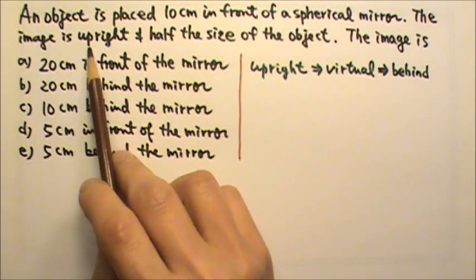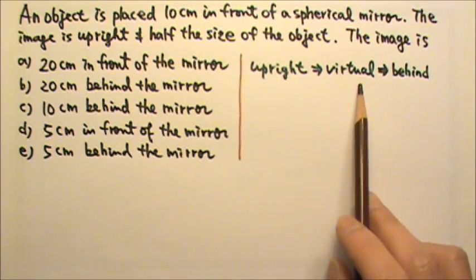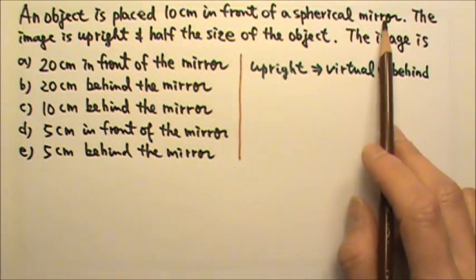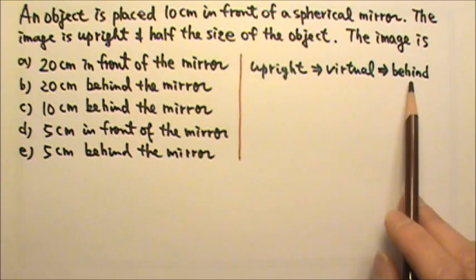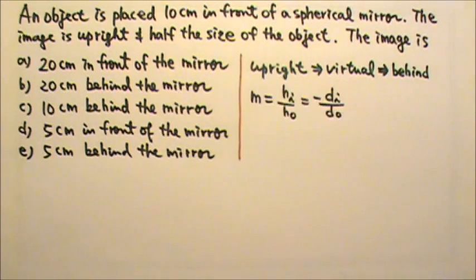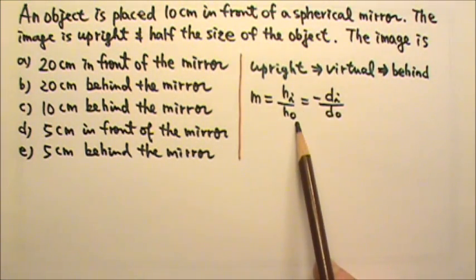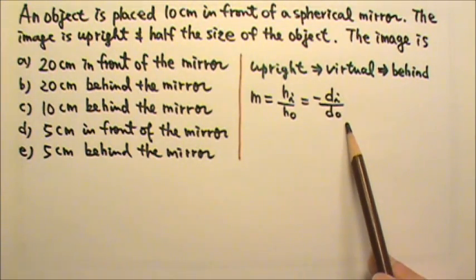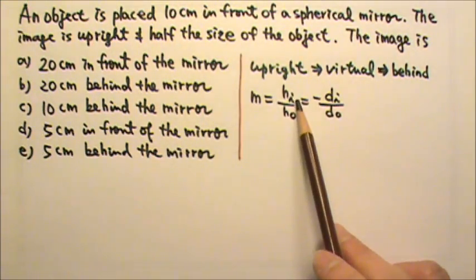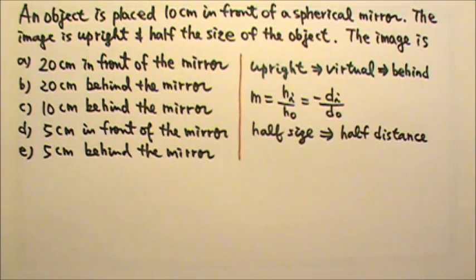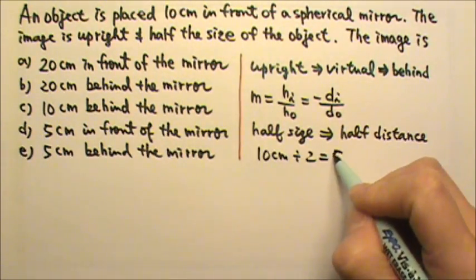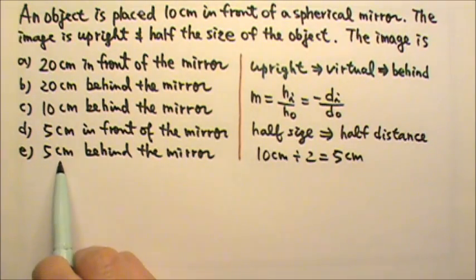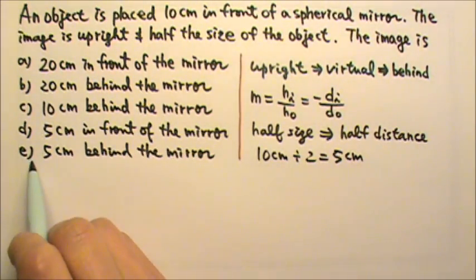An upright image produced by a single mirror is a virtual image. Because a mirror reflects light, the virtual image formed by the extension of light rays must be behind the mirror. And because the magnification HI over HO is also negative DI over DO, size is proportional to the distance. Half size means half distance. So 10 cm divided by 2 gives us 5 cm. So the answer is 5 cm behind, the answer is D.